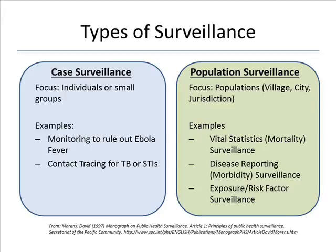The focus of population surveillance is populations — village, city, jurisdiction, etc. Examples include vital statistics surveillance (mortality), disease reporting surveillance (morbidity), and exposure or risk factor surveillance.